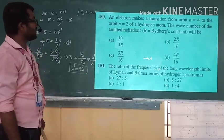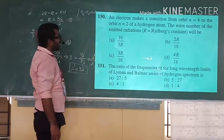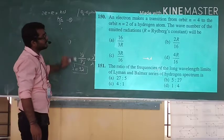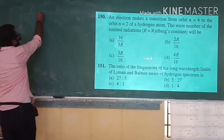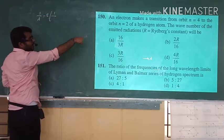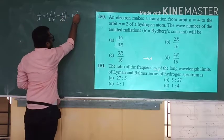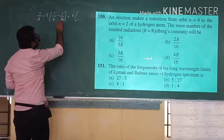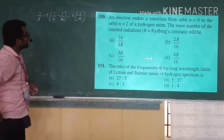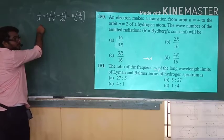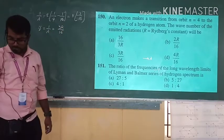Problem: An electron makes a transition from N = 4 to N = 2 in a hydrogen atom. Find the wave number of the emitted radiation. Using 1/λ = R(1/2² − 1/4²) = R(1/4 − 1/16) = R(4−1)/16 = 3R/16. The wave number μ̄ = 1/λ = 3R/16. Answer is option C.